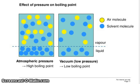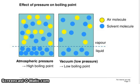Effect of pressure on boiling point: atmospheric pressure versus vacuum low pressure gives high boiling point versus low boiling point. In vacuum low pressure, you can see air molecules in yellow at atmospheric pressure and blue solvent molecules. In vacuum low pressure, we observe vapor and liquid phases.